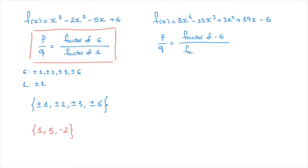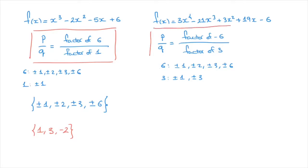The factors of negative 6 are the same as the factors of 6: plus or minus 1, plus or minus 2, plus or minus 3, and plus or minus 6. The factors of 3 would be plus or minus 1 and plus or minus 3. If we consider 1 as a factor of 3, that leads us to 8 potential rational roots: plus or minus 1, plus or minus 2, plus or minus 3, and plus or minus 6.